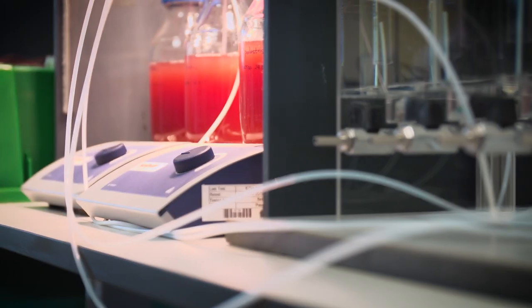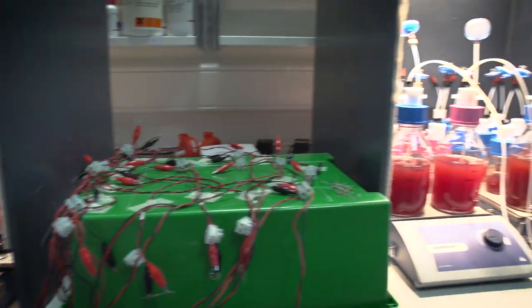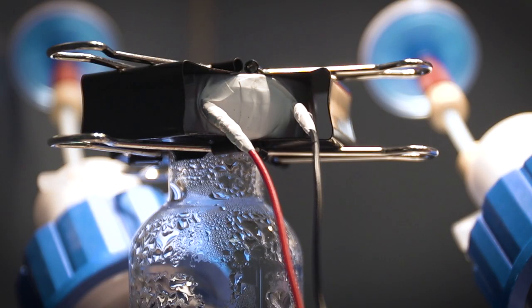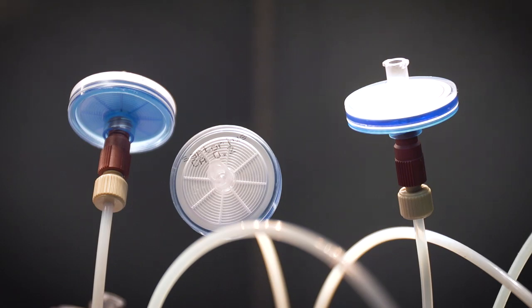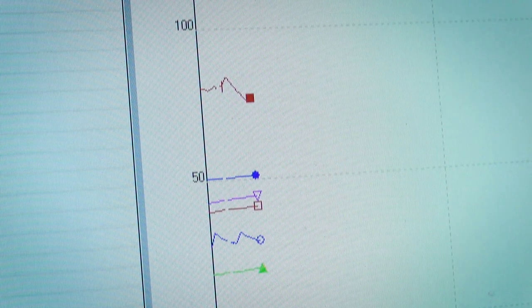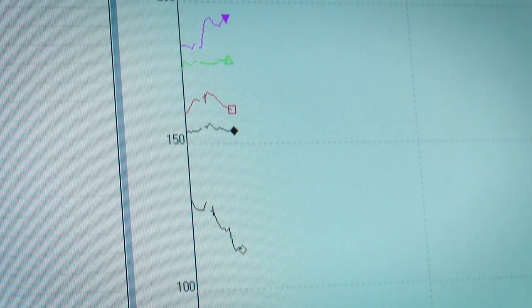Anoxygenic photosynthetic bacteria is a purple non-sulphur bacteria that we use in a specific bioelectrochemical system called a photosynthetic microbial fuel cell. In the microbial fuel cell, there's oxidation of carbon sources, and that generates an electron flow which we can capture as an electric current when it flows to the cathode.